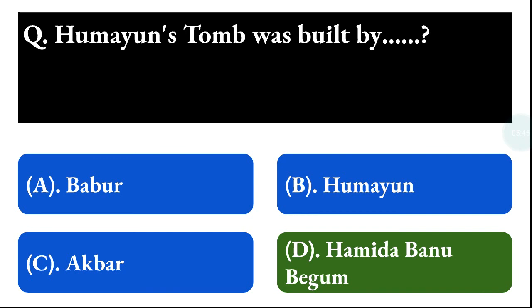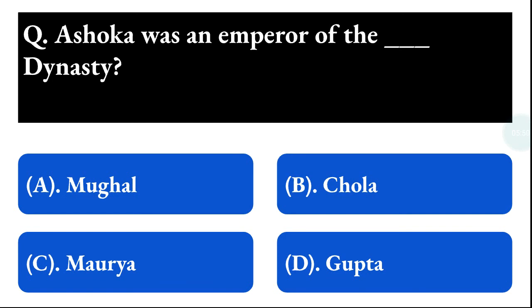Next question: Ashoka was an emperor of which dynasty? Option A: Mughal, option B: Chola, option C: Maurya, option D: Gupta. The correct answer is option C, that is Maurya.